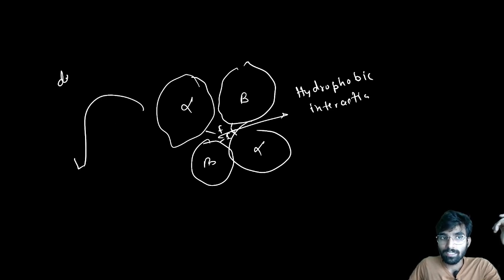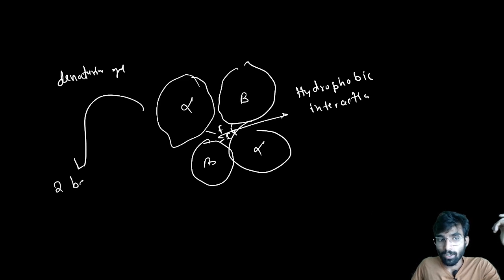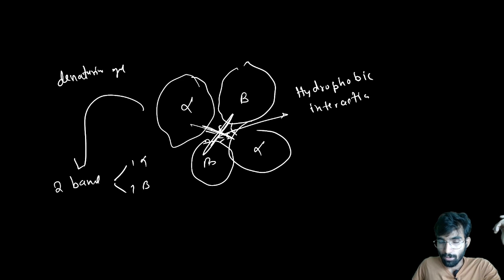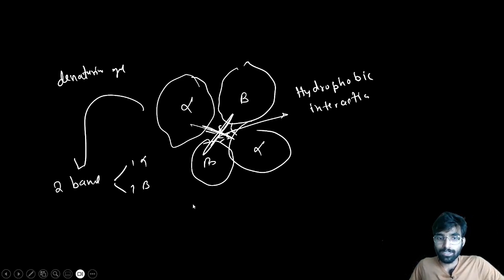For example, if you run hemoglobin (2 alpha, 2 beta) on a denaturing gel, you will see two distinct bands: one for the alpha subunit and one for the beta subunit. The two alpha subunits run as one band, and the two beta subunits run as another band. That's all for today.